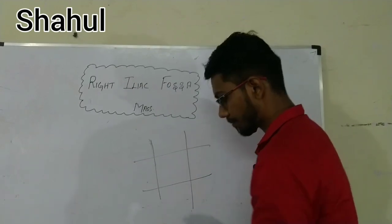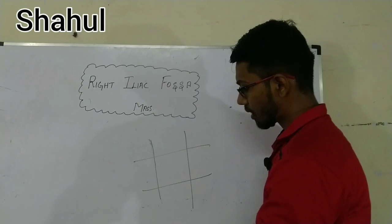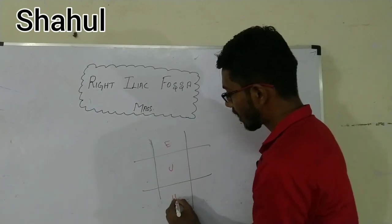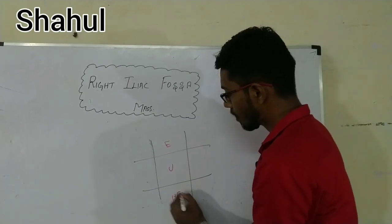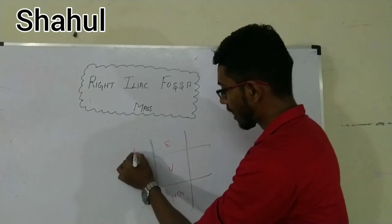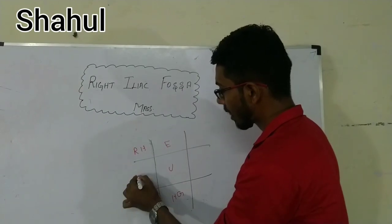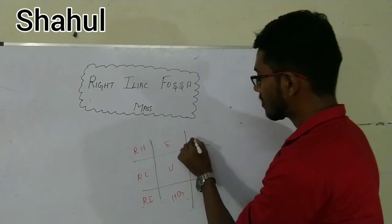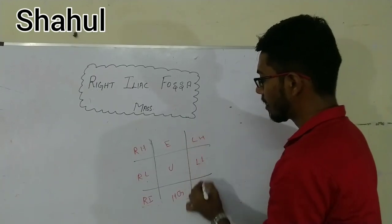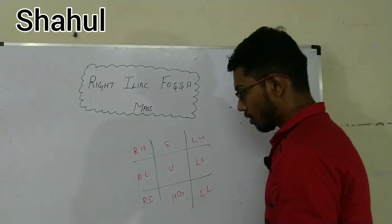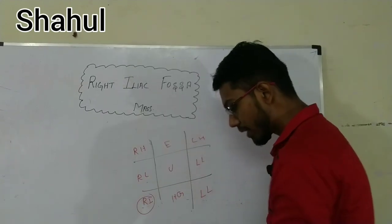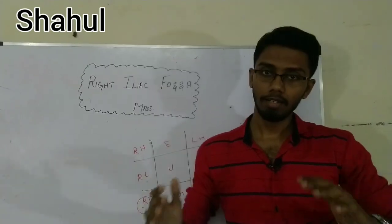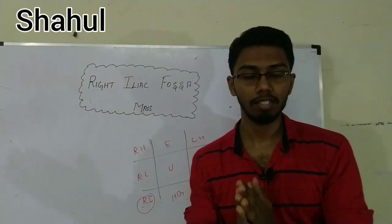The nine regions are: epigastric region, umbilical, and hypogastrium in the central column. On the right side we have right hypochondrium, right lumbar, and right iliac. On the left side we have left hypochondrium, left lumbar, and left iliac. So this is the topic we are going to study — right iliac mass.